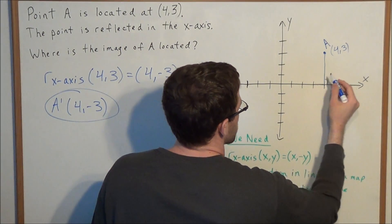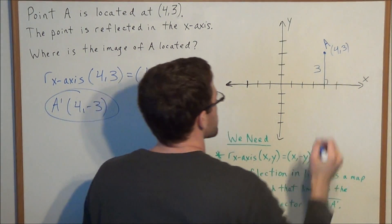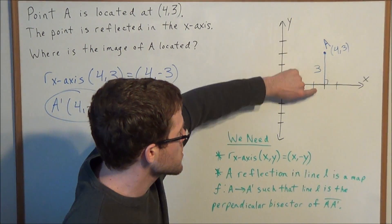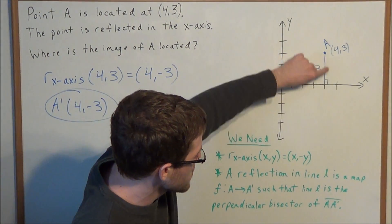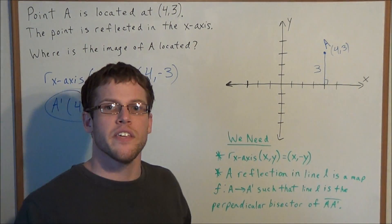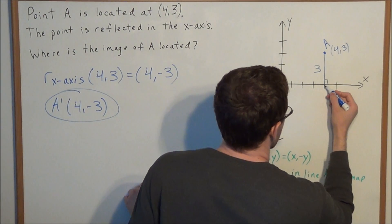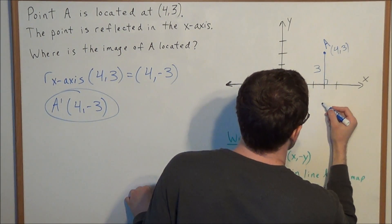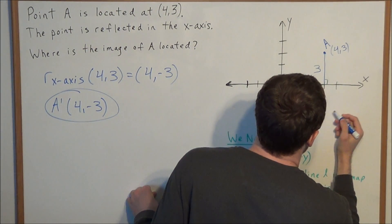We're going down 1, 2, 3. So when we reflect in the x-axis, we need to go 3 units away from the x-axis in the other direction. We're starting at the x-axis, and we're going 1, 2, 3 to the point A prime.